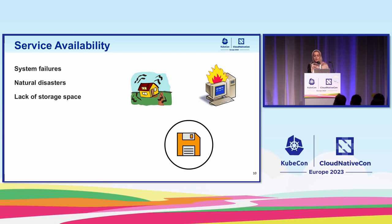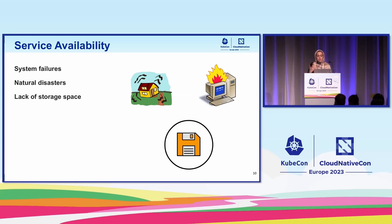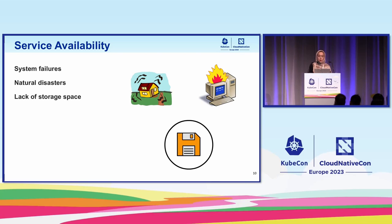Speaking of availability, with search being a critical service, we need to make sure it's always available — meaning that failures of pods, systems, or even natural disasters that lead to regional failures should have minimal impact on this service. We also need to make sure that Elasticsearch StatefulSets always have enough storage space and are able to adapt to sudden changes in storage requirements.